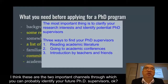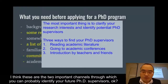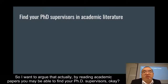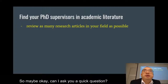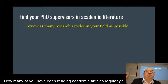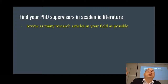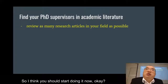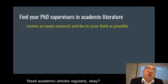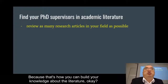I also encourage you to read more academic literature and go to academic conferences — these are two important channels through which you can identify your future PhD supervisors. By reading academic papers you may be able to find your PhD supervisors. What you need to do is read as many research articles in your field as possible. How many of you have been reading academic articles regularly? If you're not doing it now, you should start. Read academic articles regularly — that's how you build your knowledge about the literature.